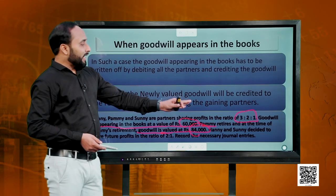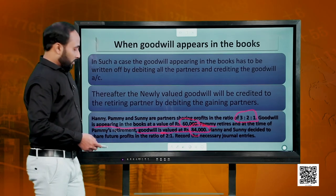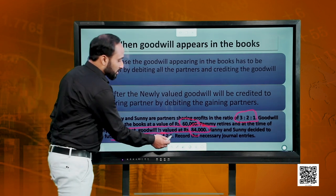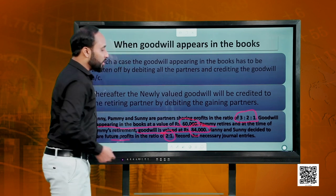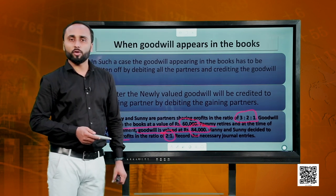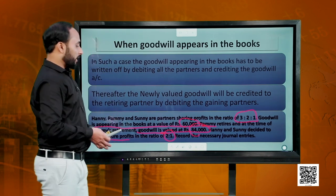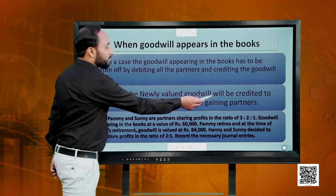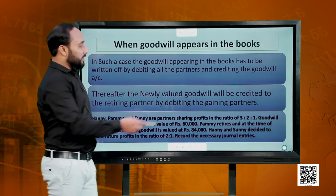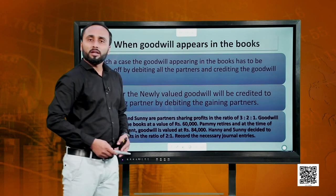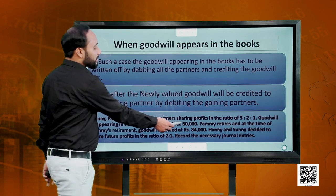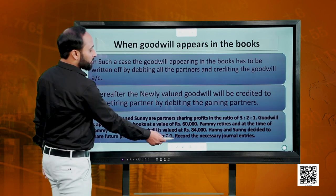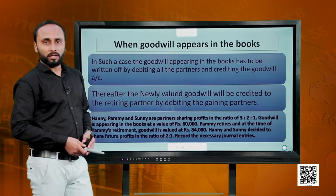Henny and Sunny decided to share future profits in the ratio of 2:1, which is the new profit sharing ratio. We have to pass the journal entries. Revisiting the question: the old ratio is 3:2:1, the old goodwill is 60,000, the new goodwill is 84,000, and the new ratio is 2:1.